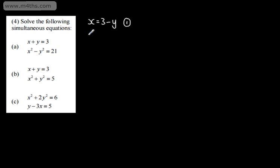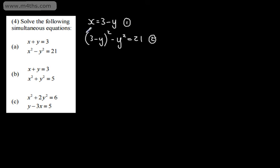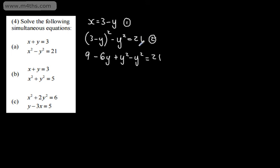So, x squared becomes 3 minus y, which we need to square, minus the existing y squared, and that equals 21. We can see now that equation 2 is all in terms of y. Expanding the brackets, we get 9 minus 6y plus y squared minus y squared equals 21. So, this is equation 2.